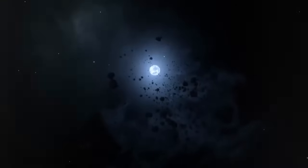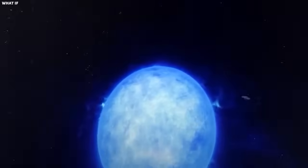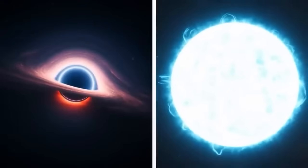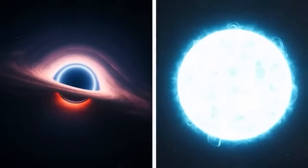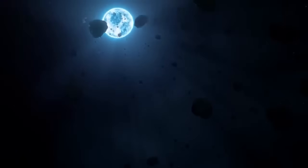Conversely, if the core isn't massive enough, it could become a neutron star, which is an incredibly dense body, primarily composed of neutrons. Neutron stars are so dense that a teaspoon of their material would weigh billions of tons on Earth. Witnessing the birth of either a black hole or a neutron star from the remnants of Betelgeuse would be a monumental moment for astronomy, allowing us to observe and understand the final stages of stellar evolution up close.